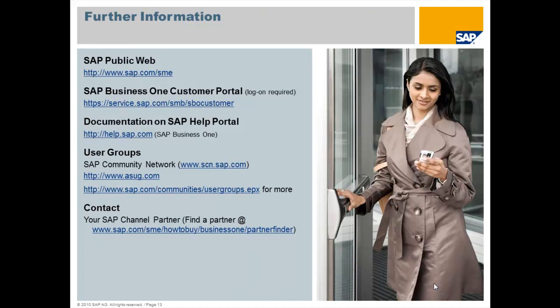For additional information, you can access the SAP Business One Customer Portal once you become a customer, the SAP Help Portal for documentation, user groups and community networks, and the Partner Finder to locate a channel partner close to you. You can also contact the SAP office in your country. On behalf of everyone at SAP, thank you for taking the time to view this presentation. We look forward to welcoming you to the SAP family and helping you become a best-run business with the SAP Business One Starter Package.